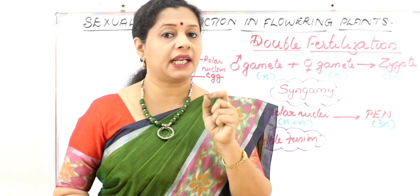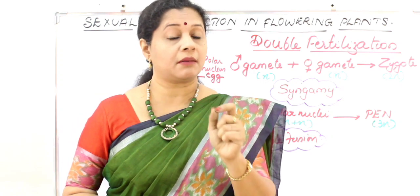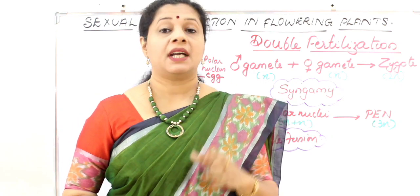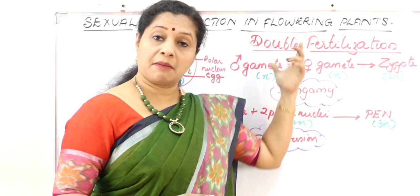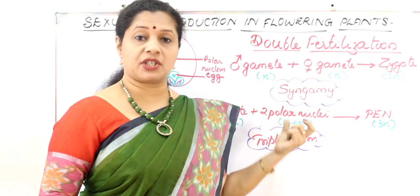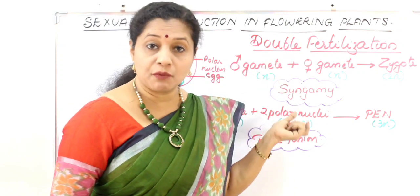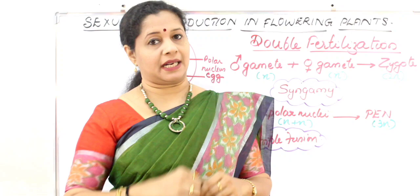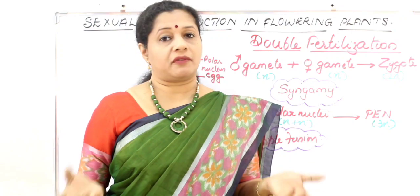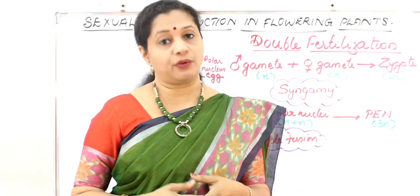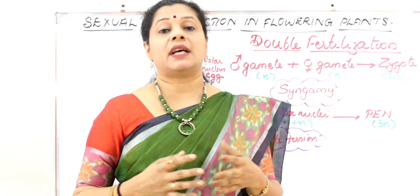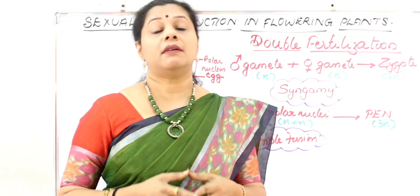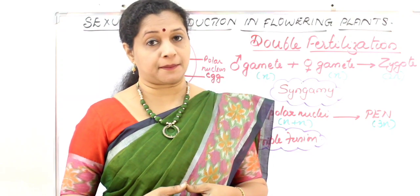The prerequisite for double fertilization is that two gametes must be present. During pollen-pistil interaction, when the pollen tube grows down, there are two male gametes. So of course there will be two fusions, resulting in what is called double fertilization.